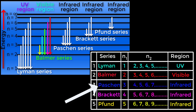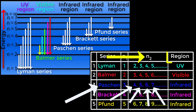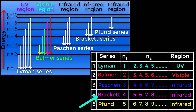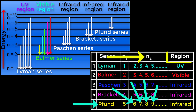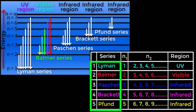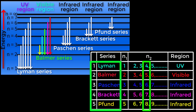For Paschen series, n1 equals 3 and n2 equals 4, 5, 6, 7, and so on; the region is infrared. For Brackett series, n1 equals 4 and n2 equals 5, 6, 7, 8, and so on; the region is also infrared. For Pfund series, n1 equals 5 and n2 equals 6, 7, 8, 9, and so on; the region is also infrared. According to each series, these are their first line numbers, second line numbers, third line numbers, and so on.